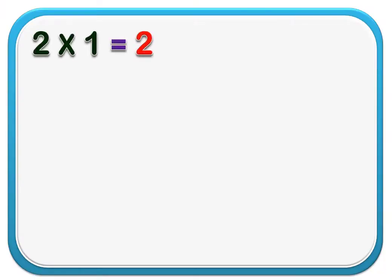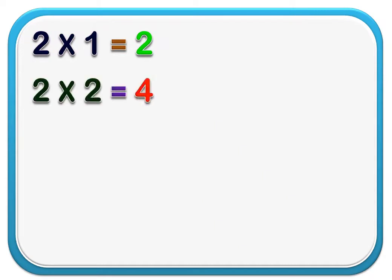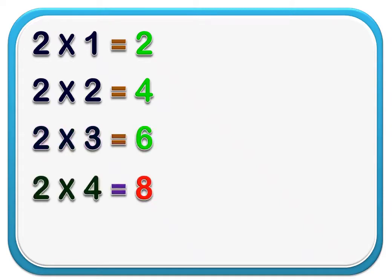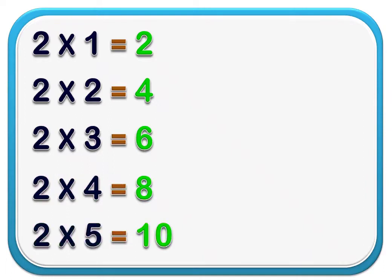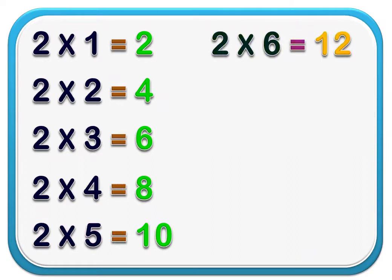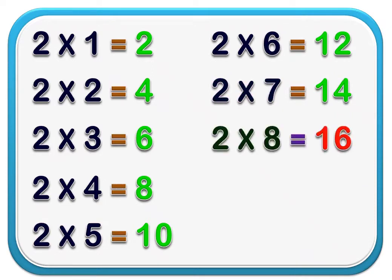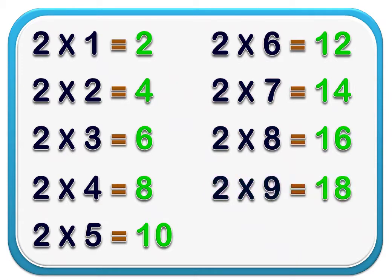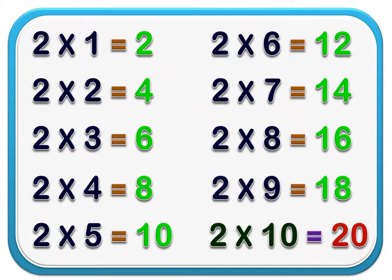2 1's are 2. 2 2's are 4. 2 3's are 6. 2 4's are 8. 2 5's are 10. 2 6's are 12. 2 7's are 14. 2 8's are 16. 2 9's are 18. 2 10's are 20.